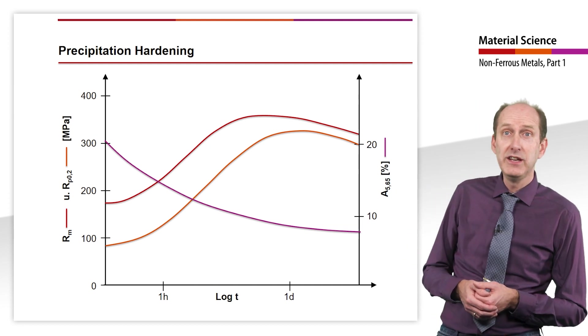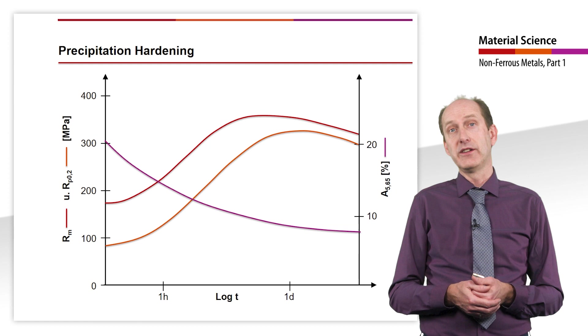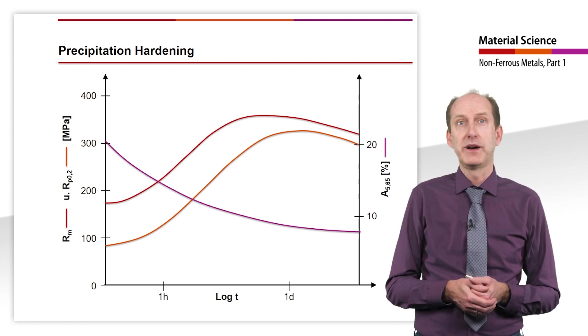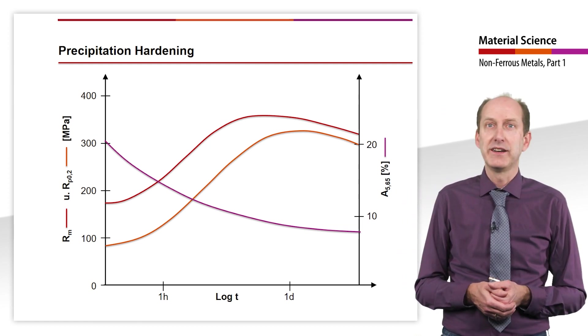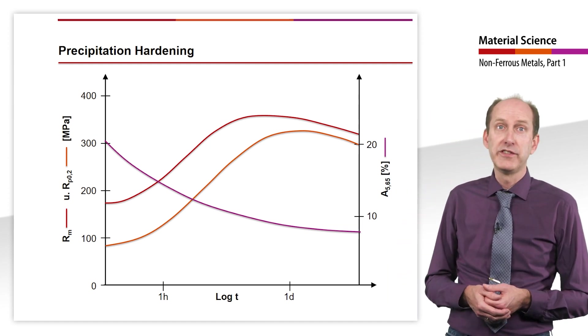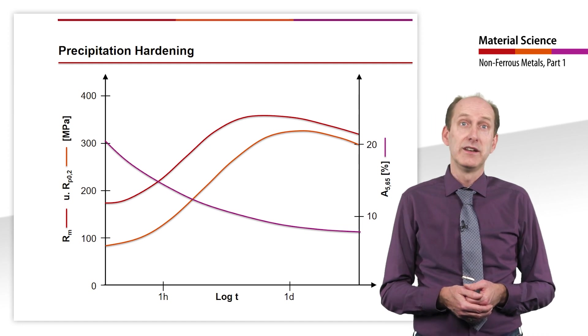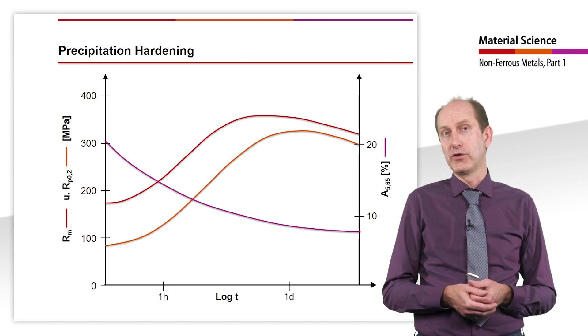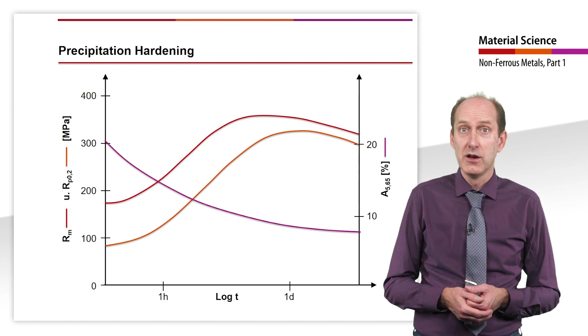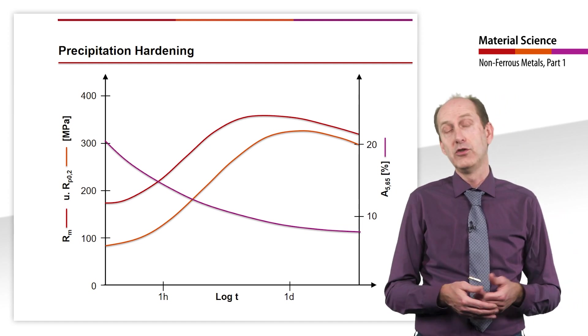In this diagram, it can be seen once again how enormously yield strength and tensile strength can be increased by this precipitation hardening in aluminum alloys. Also clearly visible for this alloy under the selected aging conditions is the attainment of a maximum after approximately 24 hours of aging and a subsequent slow drop in strength due to over aging.